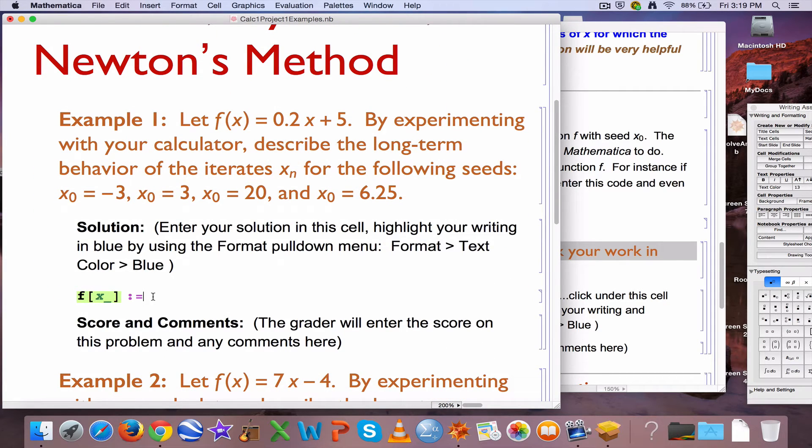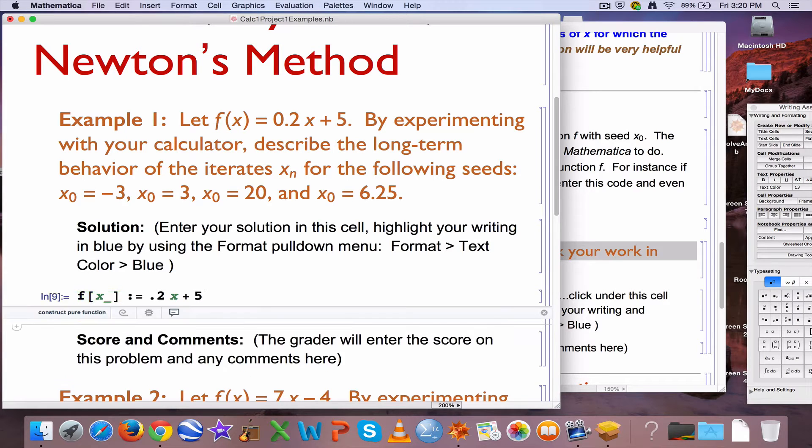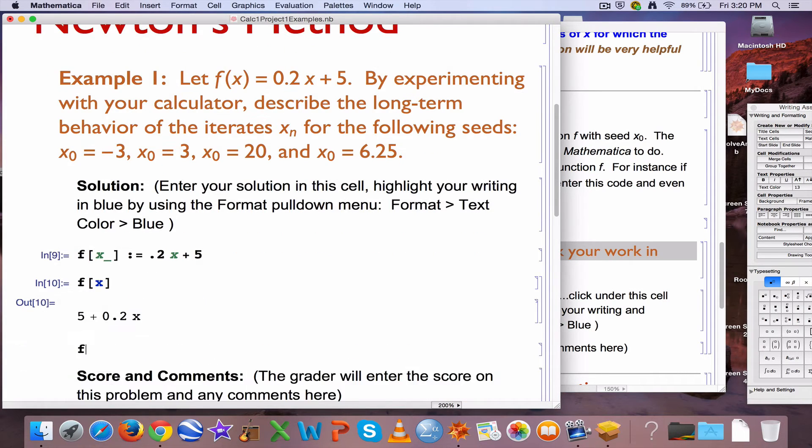I am going to go ahead and enter this function with the standard way of defining functions in Mathematica. Use square brackets for the function arguments and use an underscore when you first define a function, and I like using a colon equals to define a function, 0.2x plus 5. I can enter that, it has been entered.